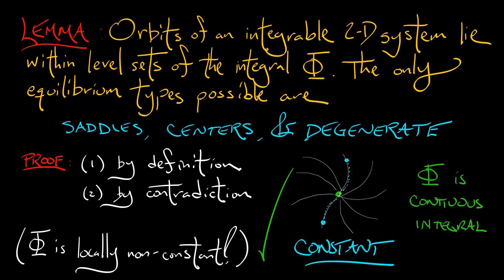That means you can't have nodes. Now, you can have saddles, you can have centers. And in fact, those are very typical in integrable systems. Discrete, continuous time, doesn't matter.